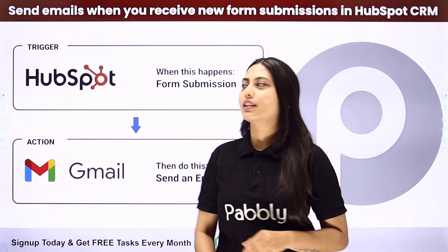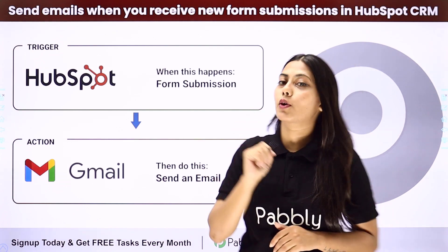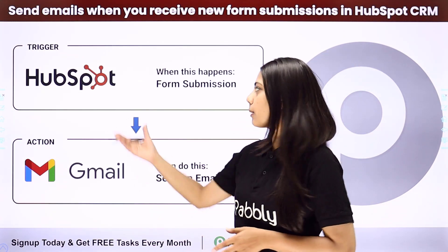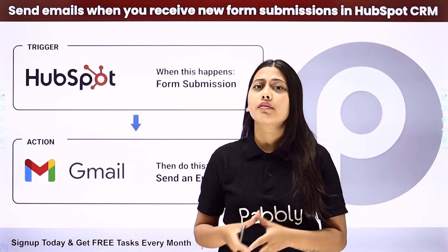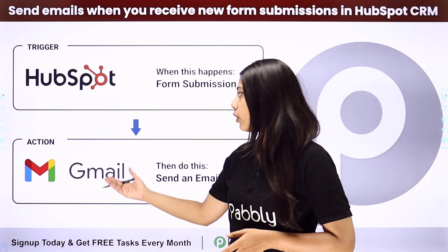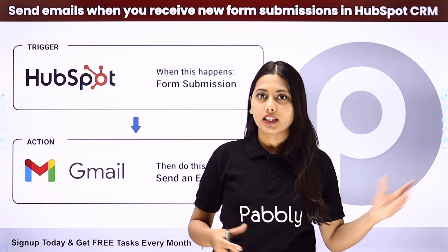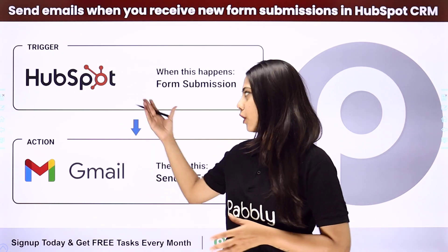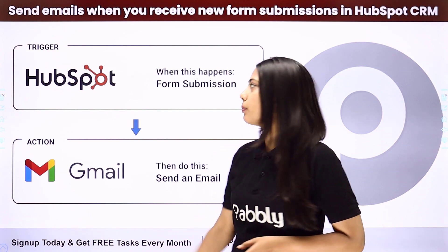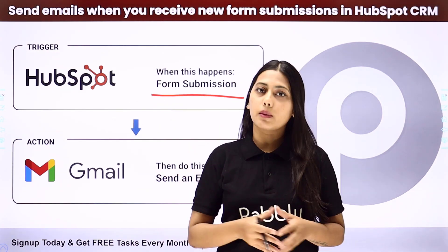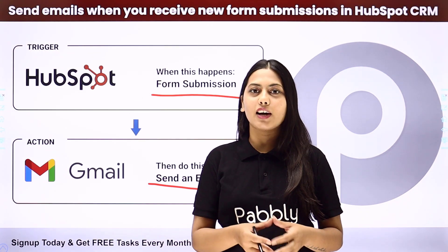Hello everyone, today we will learn how to send emails when you receive a new form submission in HubSpot CRM. There is a feature in HubSpot where you can create a form and receive form submissions from your customers. Whenever you receive a form submission, you want to send your customers a confirmation email. Rather than sending emails one by one manually, you can create an automation for this process with the help of Pabbly Connect. Today we will learn to create this integration where our trigger will be a form submission in HubSpot and our action will be to send a confirmation email via Gmail.